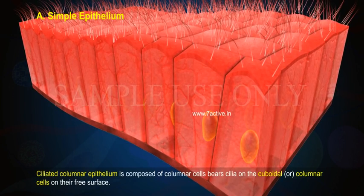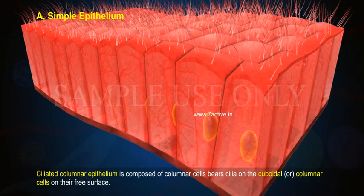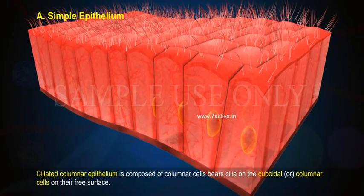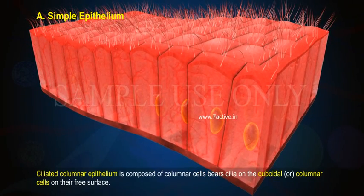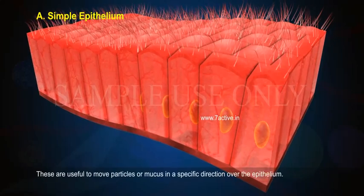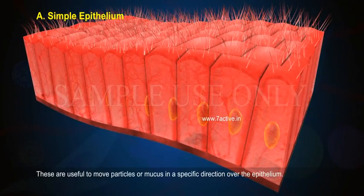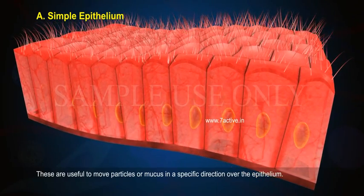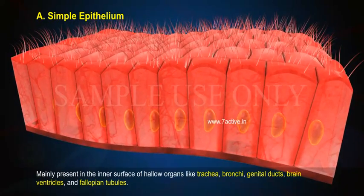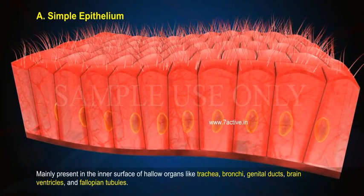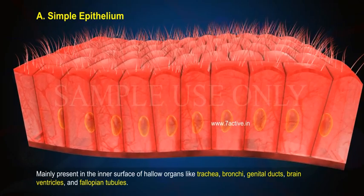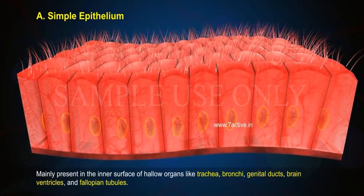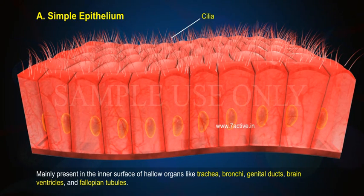Ciliated columnar epithelium is composed of columnar cells bearing cilia on the free surface of cuboidal or columnar cells. These are useful to move particles or mucus in a specific direction over the epithelium. They are mainly present on the inner surface of hollow organs like the trachea, bronchi, genital ducts, brain ventricles, and fallopian tubes.